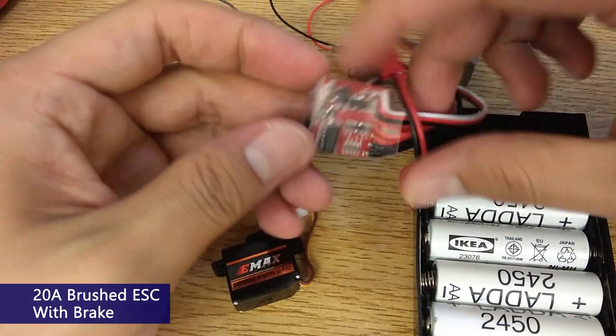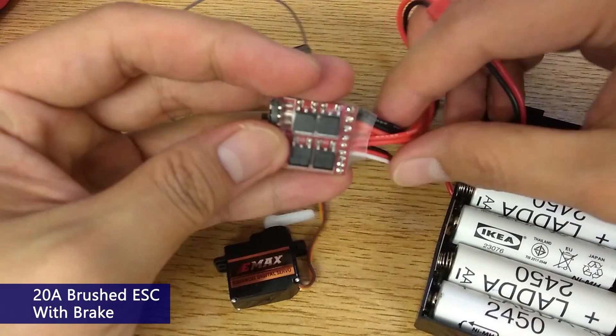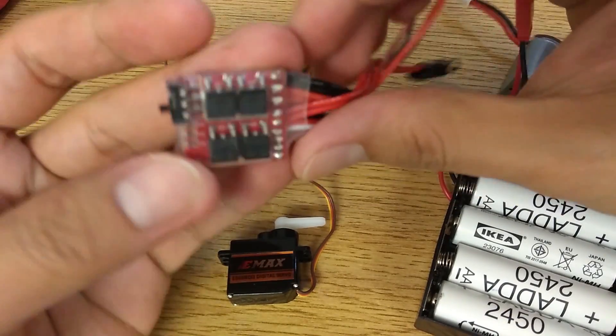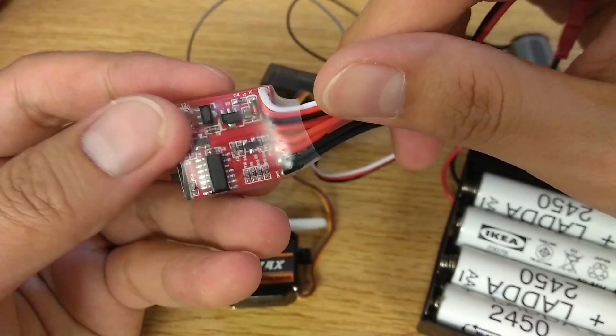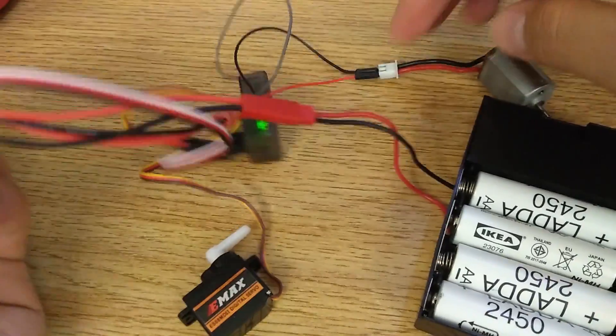Next is the ESC. I'm using a cheap small 20A ESC off eBay and this one has a switch to turn the brake on and off. I'm going to leave it on because this is a car and I need brake.